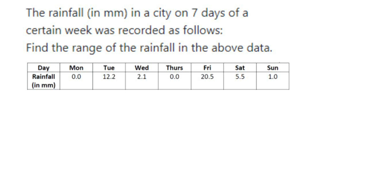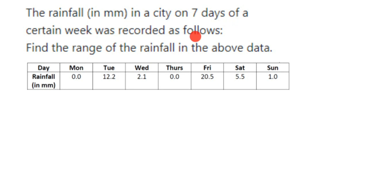Hello everyone, here is a question on range. The question is, the rainfall in MM in a city on seven days of a certain week was recorded as follows. Here is the data given, and we have to find out the range.